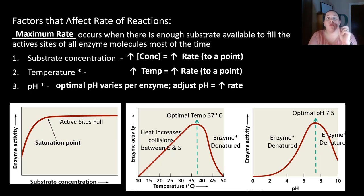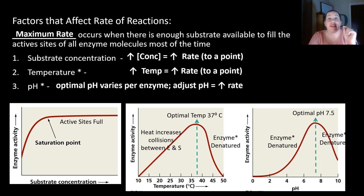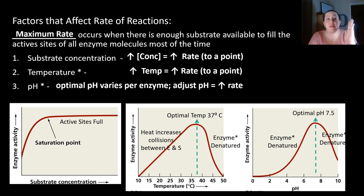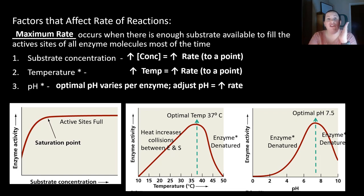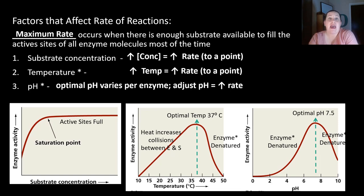We're actually going to see a lab on this. We'll test the enzyme catalase, found in potatoes. First, we'll look at substrate concentration — if we give it a lot of substrate, how does the rate look? We'll also change the temperature: cold versus room temperature versus boiled. And we'll look at pH — a pH of 3 (acidic), pH of 7 (neutral), and pH of 11 (basic) — and see how it affects the enzyme.